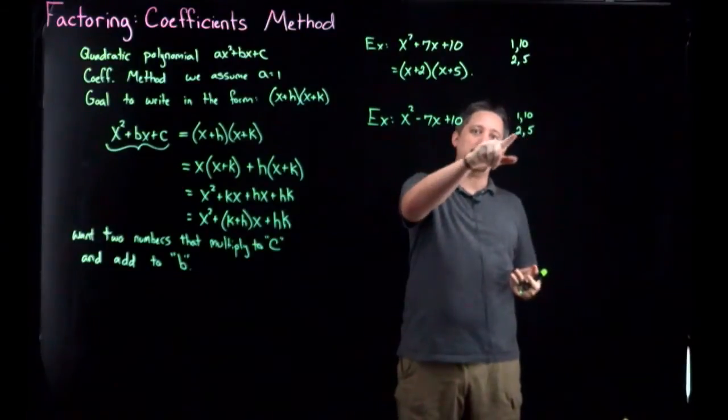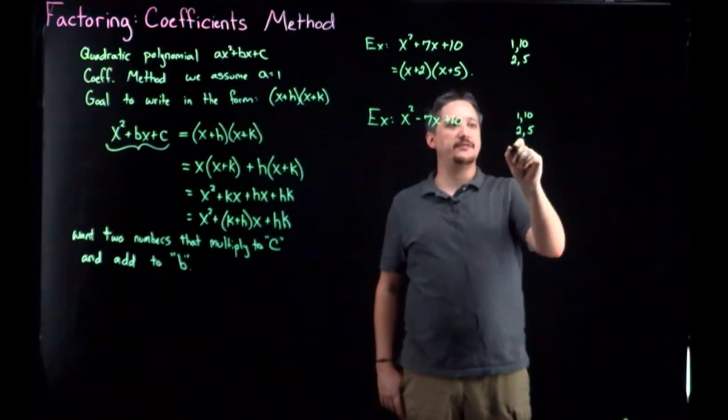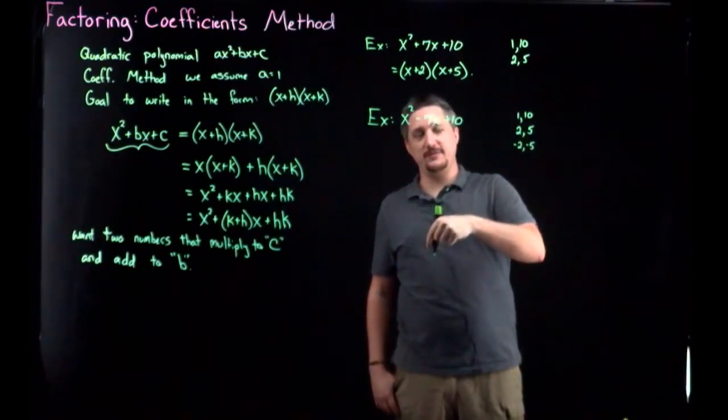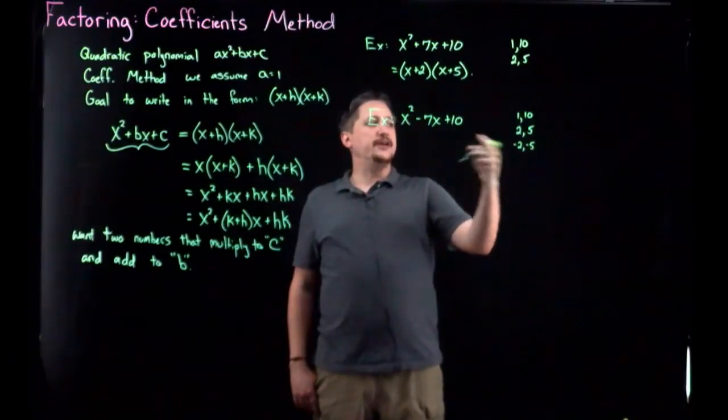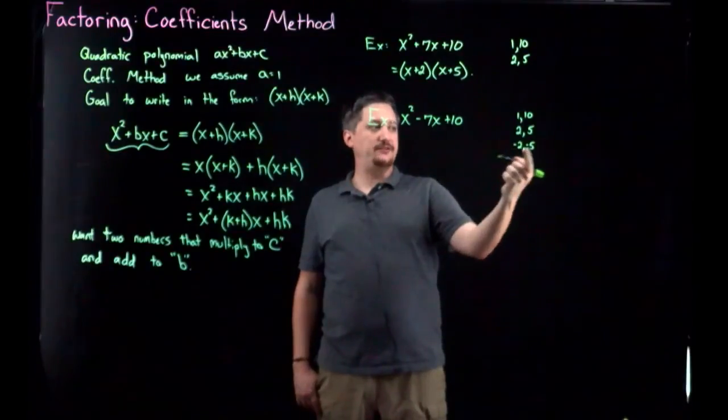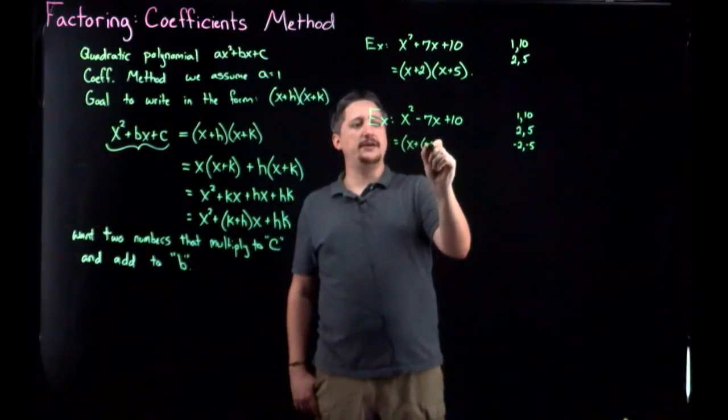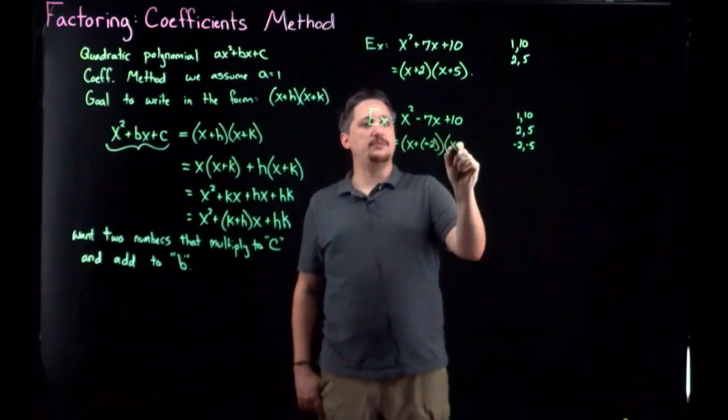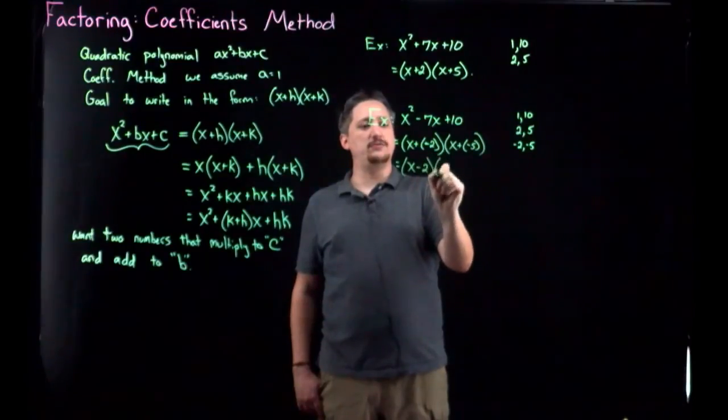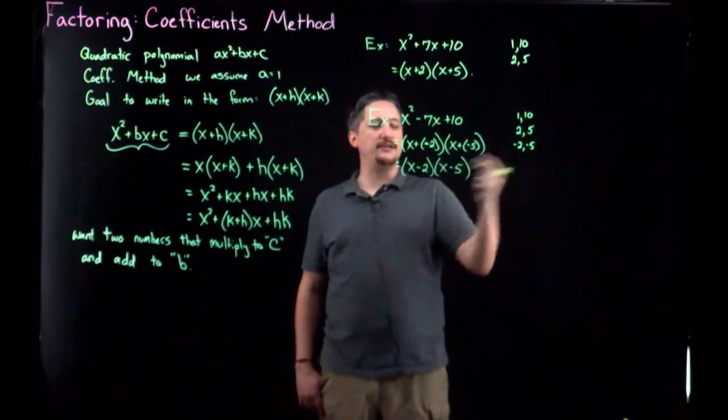Meaning if I look at 2 times 5, I get 10. But if I look at negative 2 and negative 5, negative 2 times negative 5 is also positive 10. So the positive then could be two positive numbers or two negative numbers. And if I have two negatives, I can write negative 2 plus negative 5 to get negative 7. So I can get x plus negative 2 times x plus negative 5, which the more natural way of writing this is x minus 2, x minus 5. But I'm just emphasizing that I'm still doing the same process. It's still plus that thing if I'm doing it this way.